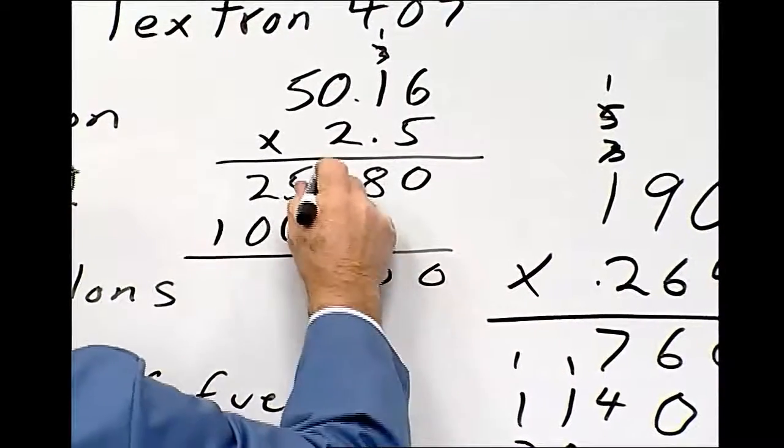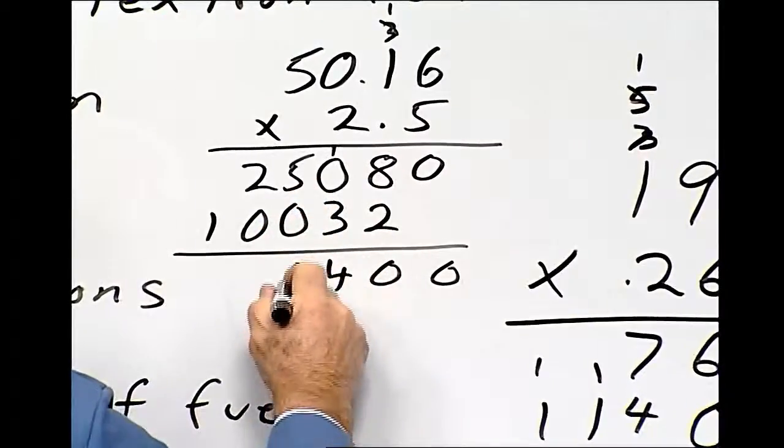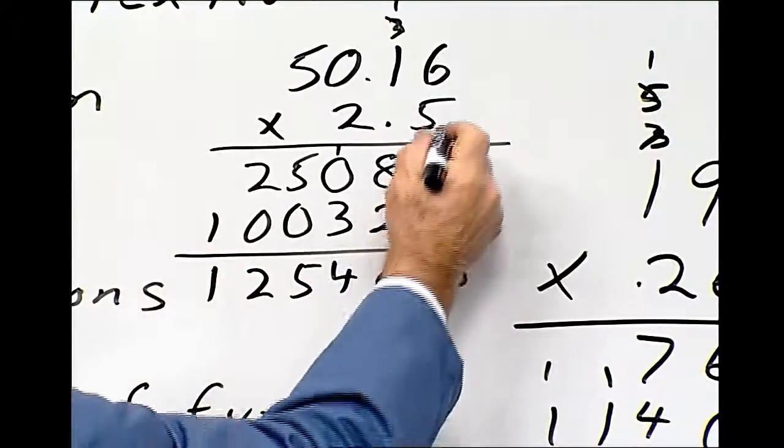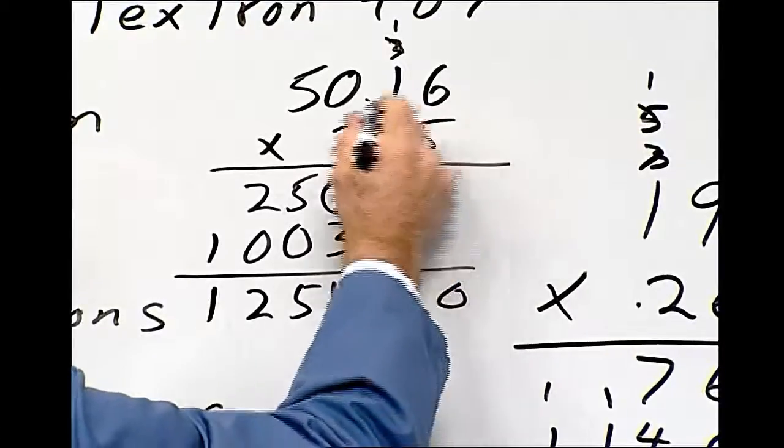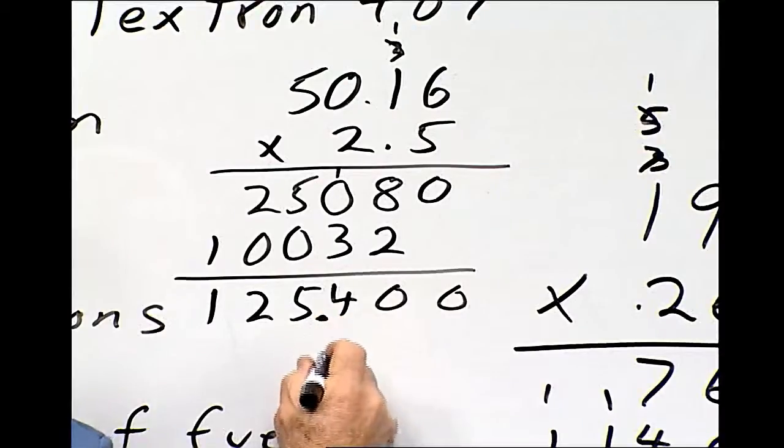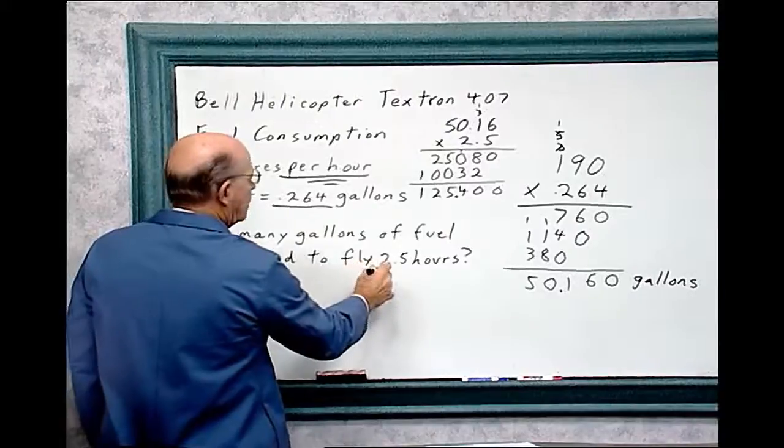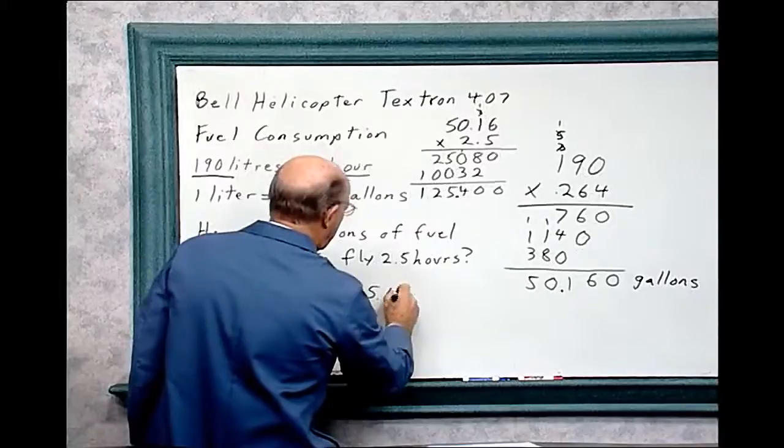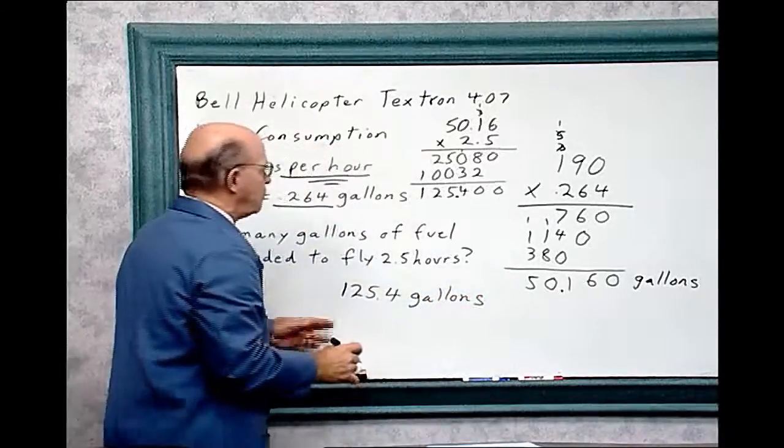Let's add these two rows together. Zero, 10. One plus three is four. Five plus zero is five. Two plus zero is two. And one. Now let's count all the decimal places: one, two, and here's one over here, three. So we've got to move this three places: one, two, three. And that's how many gallons of fuel is needed to fly two and a half hours: 125.4 gallons of fuel.